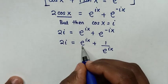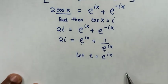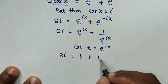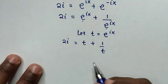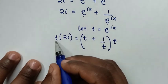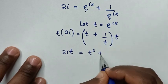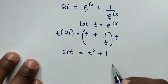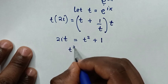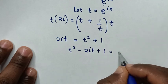Then in the next step, from here e to the power of ix is common. So we'll let t equal to e to the power of ix. Then our equation will be 2i is equal to t plus 1 over t. Then in the next step, we'll multiply by t on both sides so as to make a quadratic equation. So t times 2i will be 2it, is equal to t times t is t squared, then plus 1 over t times t is 1.